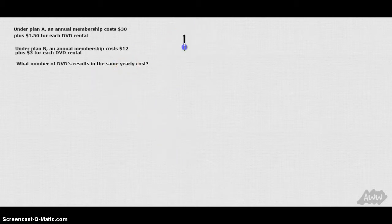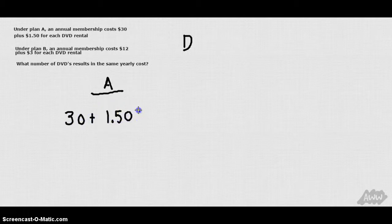So let's abbreviate the number of DVDs as D. And we'll say that membership A is going to cost $30 plus $1.50 times the number of DVDs you rent. We want to find out where this is equal to plan B which is $12 plus $3 for each DVD you rent.